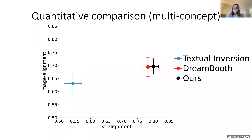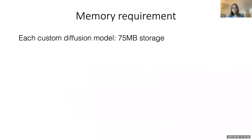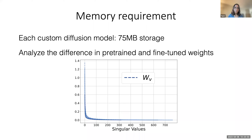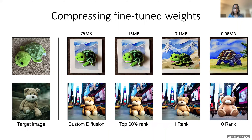Our method is more efficient both during training and in terms of disk space storage — we basically need only 75 MB per fine-tuned model. We can even compress it further if we analyze the difference in the pre-trained and fine-tuned weights. The singular values of this difference matrix drastically drop down, showing that the difference can be approximated as a low-rank matrix. With almost five times storage decrease, the generated image is still almost exactly the same, and the quantitative metrics also remain the same as the original model.